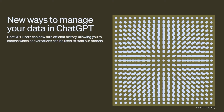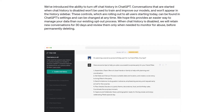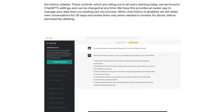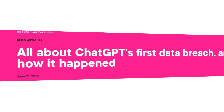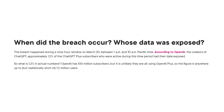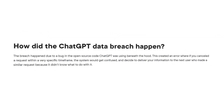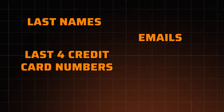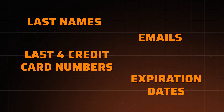You'd think that these AI concerns would only apply to companies, but personal data leaks have already happened as well. In March of 2023, due to a bug in the source code of the AI, some users were able to see the personal information of ChatGPT Plus users — last names, emails, last four digits of their credit card numbers and the expiry dates. The AI simply got confused.